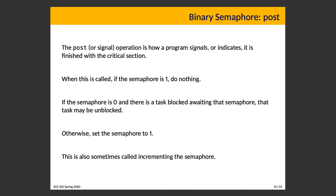Post is the mirror image. The post or signal operation indicates that a program is finished with the critical section. When invoked on a binary semaphore: if the semaphore is 1, do nothing. If it's 0 and a task is blocked awaiting that semaphore, that task is unblocked but the internal value remains 0. If nobody is waiting when post is called, the semaphore's value is set to 1. This is referred to as incrementing the semaphore. The idea is that when someone is waiting in line, the next thread just proceeds immediately, so the semaphore remains in use — it wouldn't be correct to set it to 1 because we're handing it to the next thread.